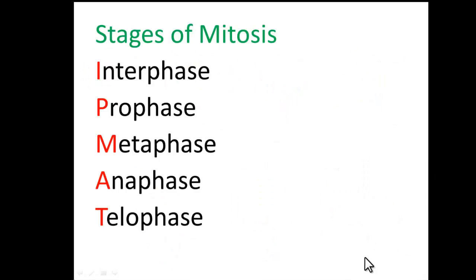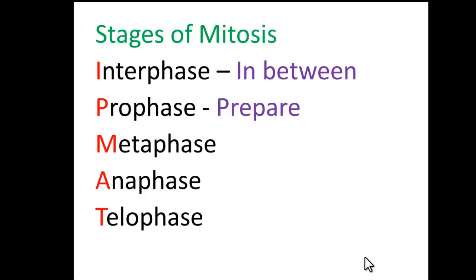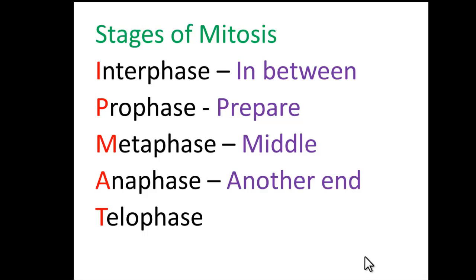To remember those stages: interphase is 'in between' — relating to the I. Prophase is where the chromosomes get prepared — they condense and replicate. Metaphase is when they're going into the middle of the cell. Anaphase — they're going to another end. And telophase — well, they're in separate cells now. If they're so far apart, they'd have to telephone each other. So IPMAT.